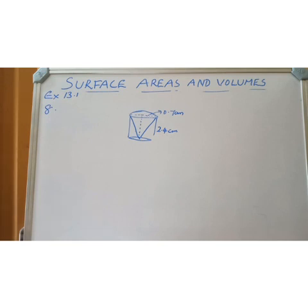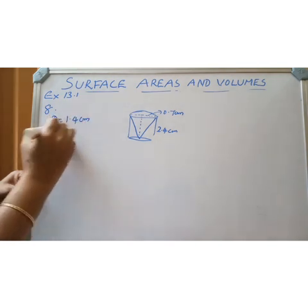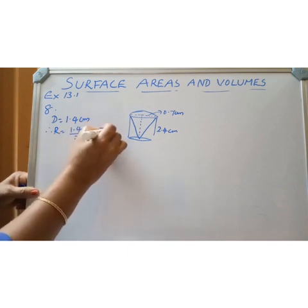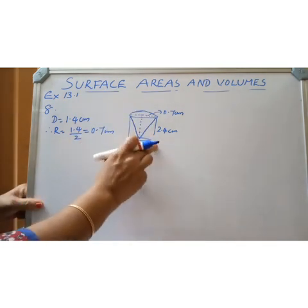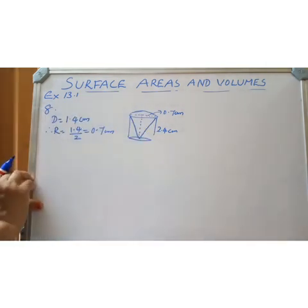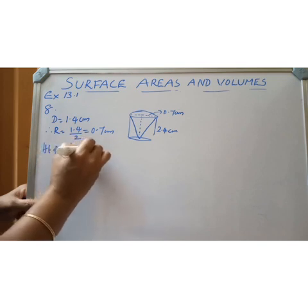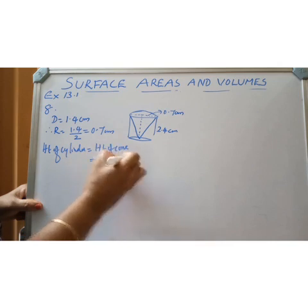We have to write the final answer rounded off to cm². What will be the radius given in the question? Diameter is 1.4 cm, so radius equals 1.4 divided by 2, that is 0.7 cm. Height of the cylinder as well as the height of the cone are the same — 2.4 cm.